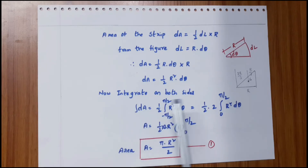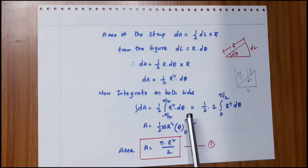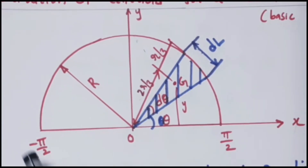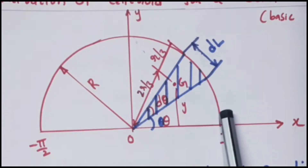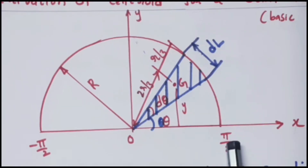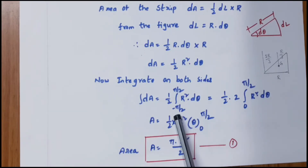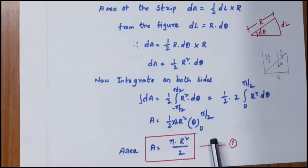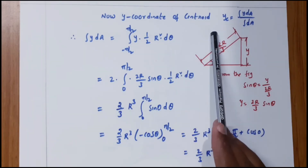To get the total area of the semicircle, integrate both sides: ∫dA = (1/2)∫r²·dθ. The limits are −π/2 to π/2, which covers the full semicircular area. By symmetry this becomes 2 times the integral from 0 to π/2, so A = r²·[θ] from 0 to π/2, giving A = πr²/2. This is equation 1.